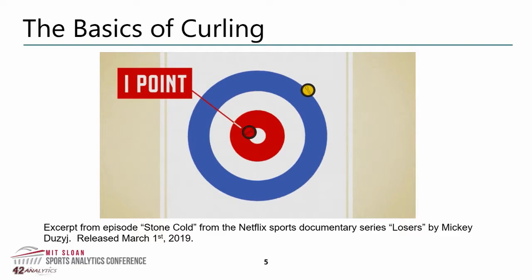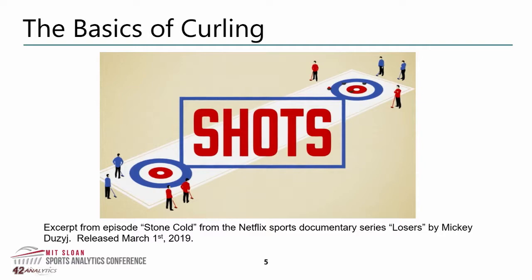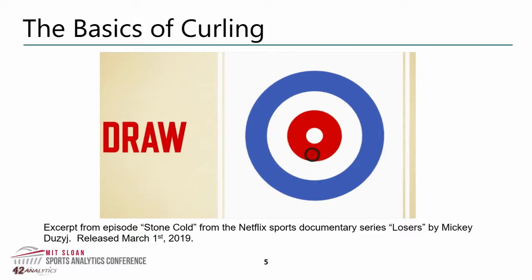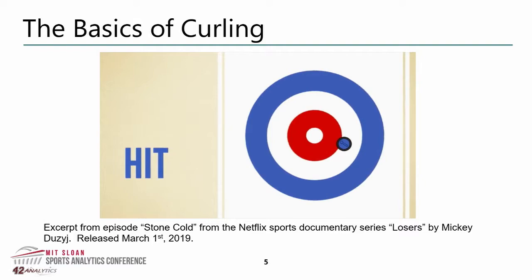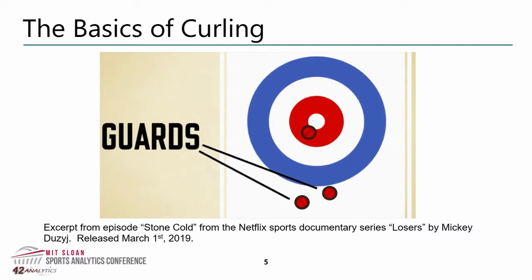The two basic shots in curling are a draw and a hit. A draw is intended to stop in the rings, while a hit is intended to remove an opponent's stone from the rings. The skip will also use guards — rocks in front of the rings — to protect their stones from being removed. Almost like playing chess on ice, the skip creates a strategy using a mix of these shots to place rocks so they can score at the completion of the end.